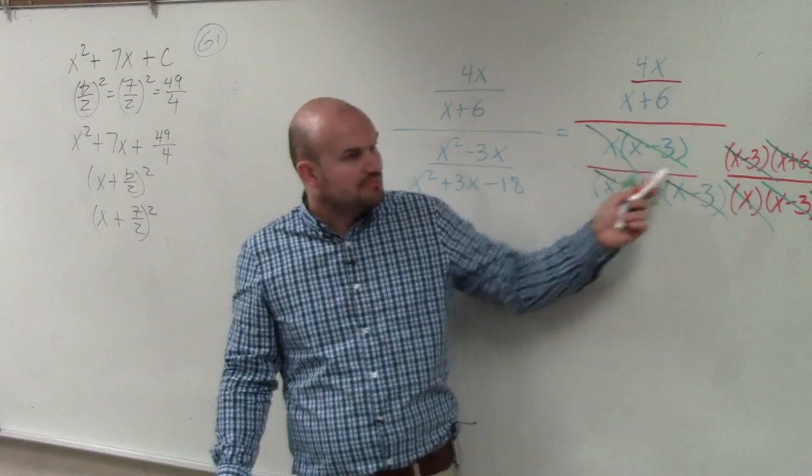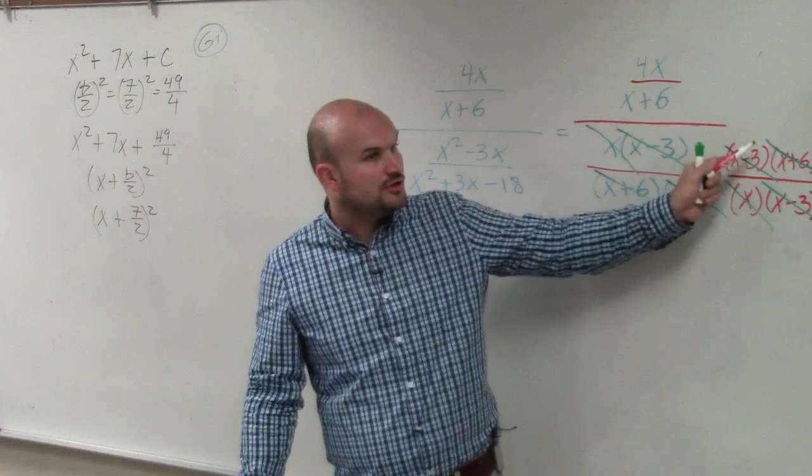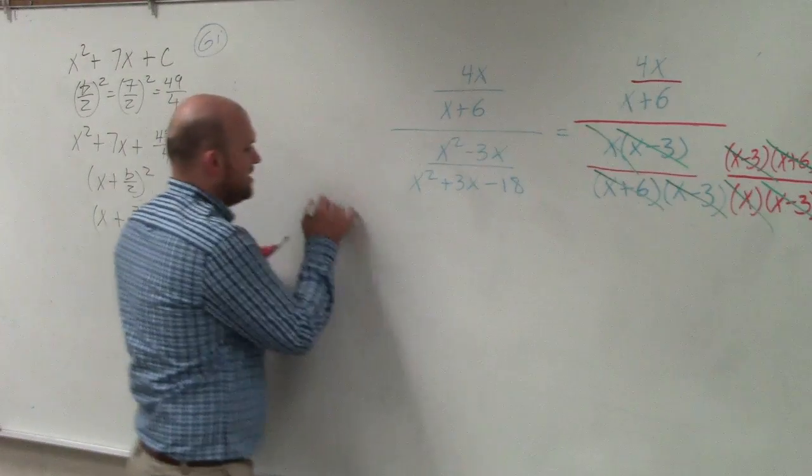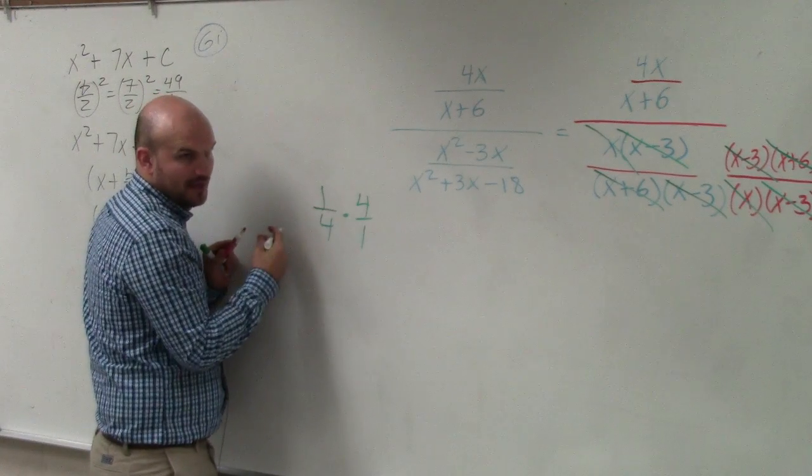I multiplied the blue by its reciprocal. So I put the denominator in the numerator, and I put the numerator in the denominator. The reciprocal of 1 fourth is 4 over 1. All I did was flip them and multiply them.